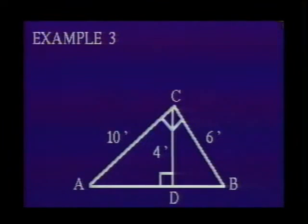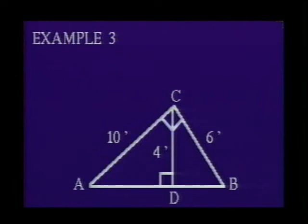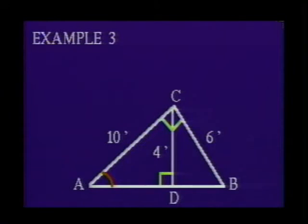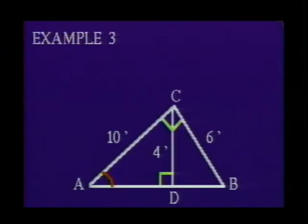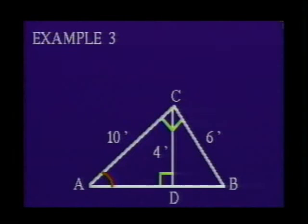Example 3: Given triangle ABC with angle ADC congruent to angle BCA, and the length of line segment AC = 10 feet, BC = 6 feet, and CD = 4 feet, find the length of line segments AB and AD. First, we need to show that triangle ABC is similar to triangle ACD. This can be done by angle-angle, since we are given angle ADC is congruent to angle BCA.